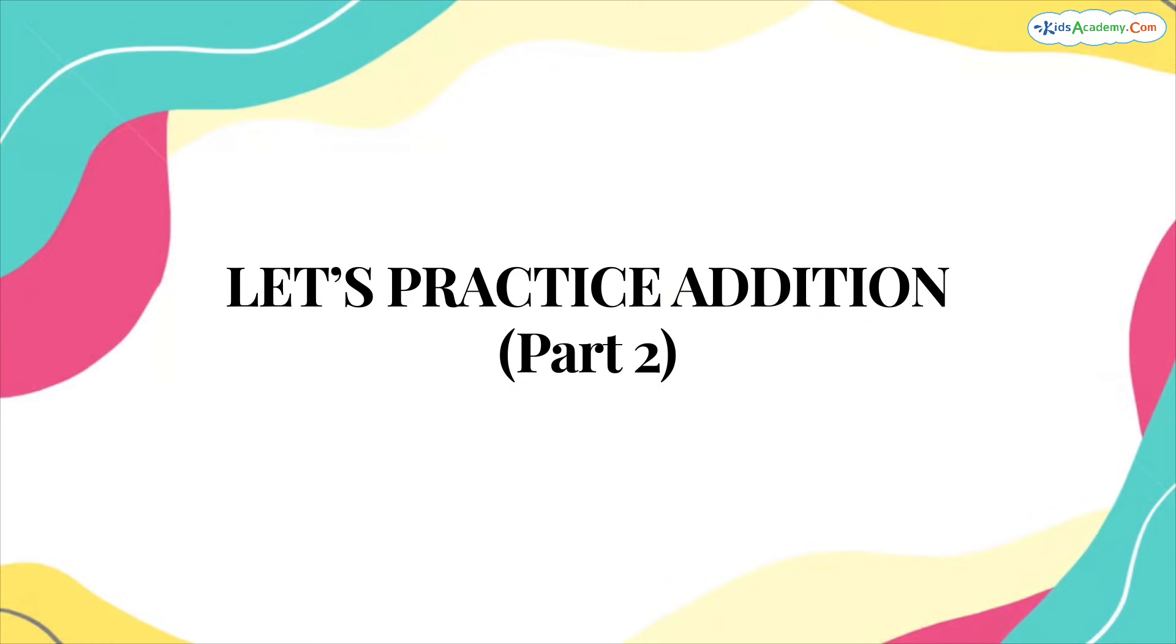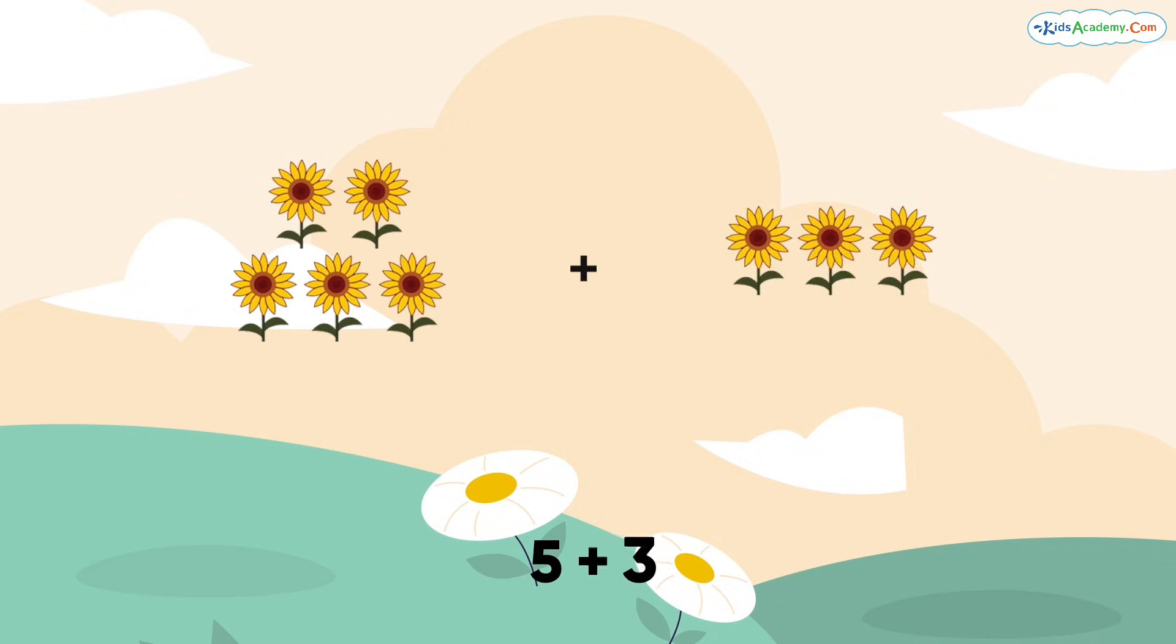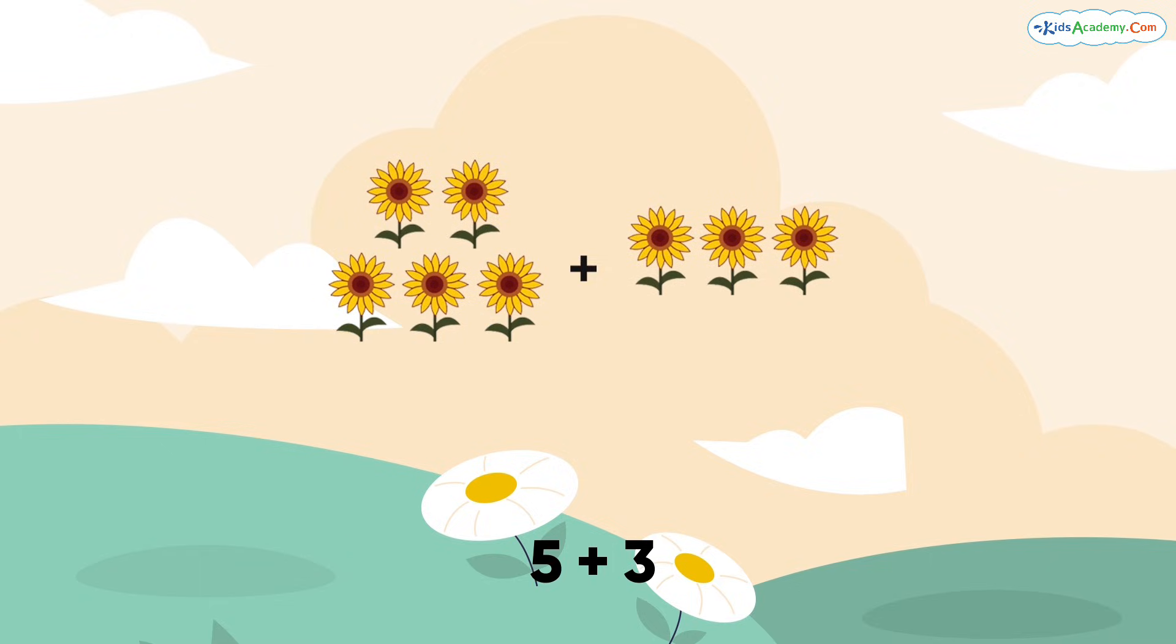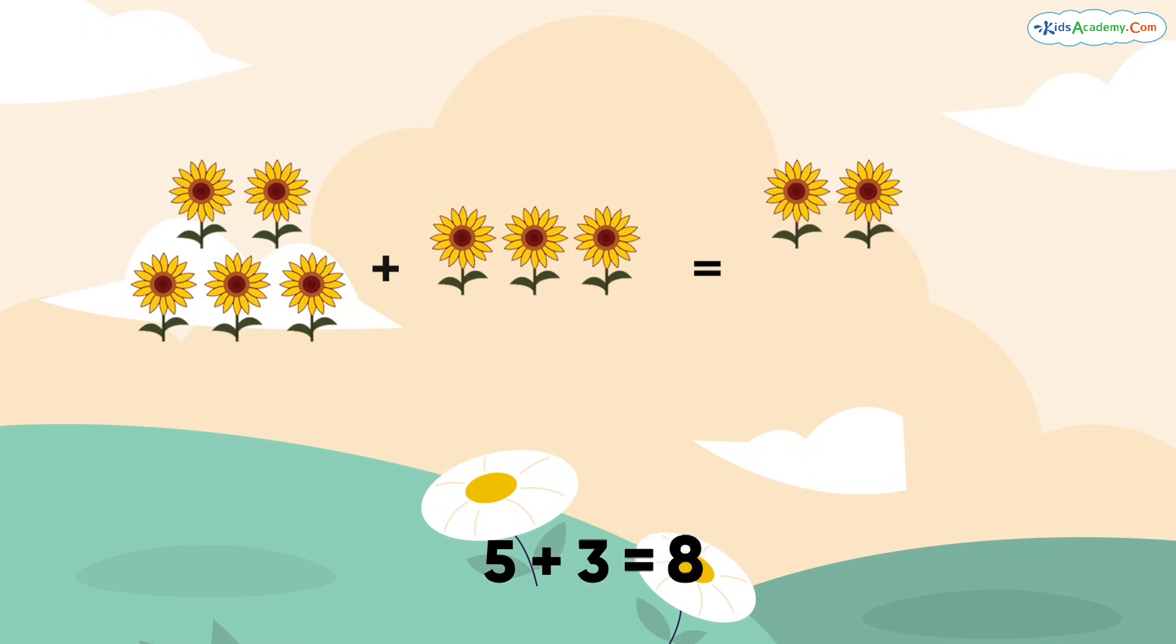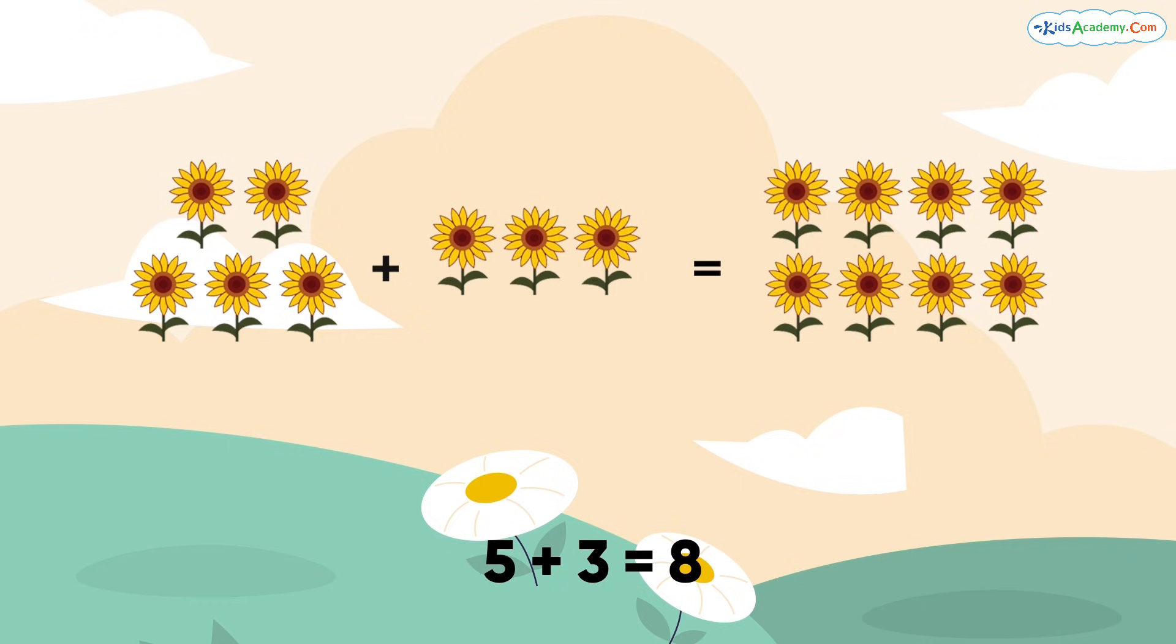Now, let's try another one. What is 5 plus 3? Let's add them together. First, count five objects, then add three more. How many do we have now? Let's count. 1, 2, 3, 4, 5, 6, 7, 8. Yes, you got it right. 5 plus 3 equals 8.